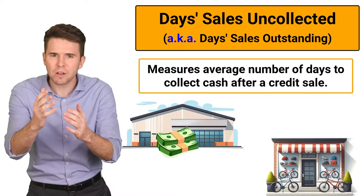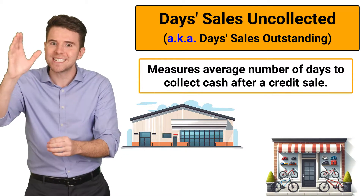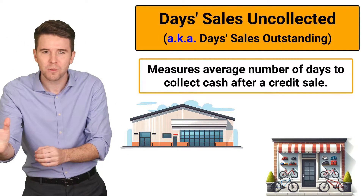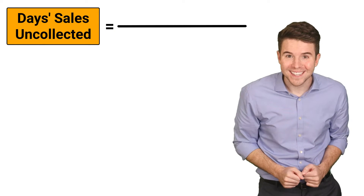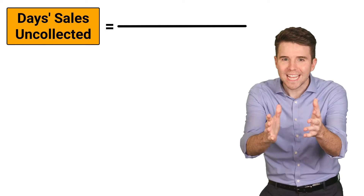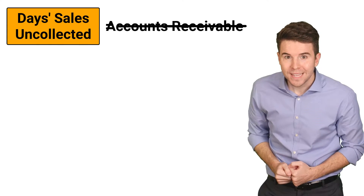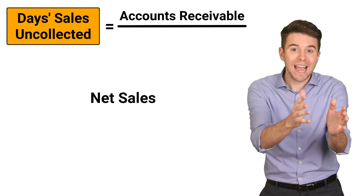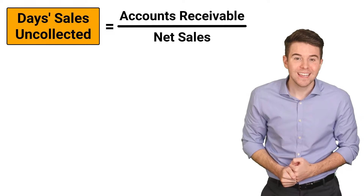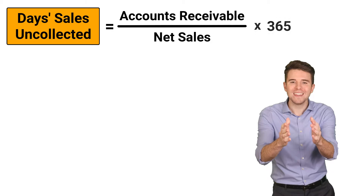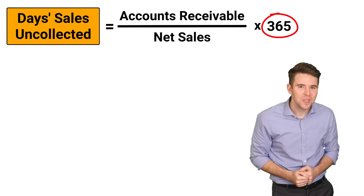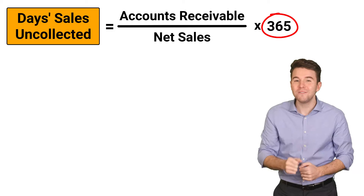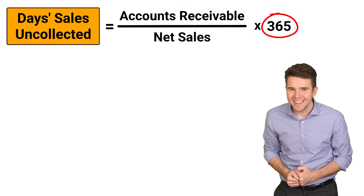This shows us how swiftly a company can turn its accounts receivables into cash. To calculate Days Sales Uncollected, we take accounts receivable, divide it by net sales, and then multiply that by 365, which represents the number of days in a year.